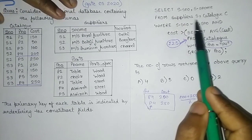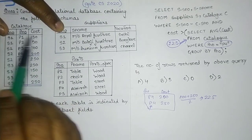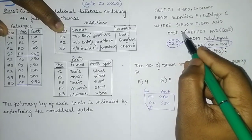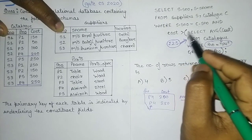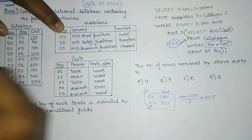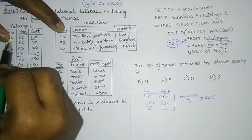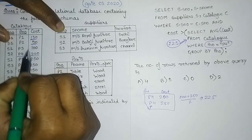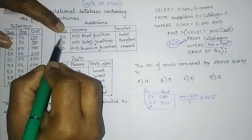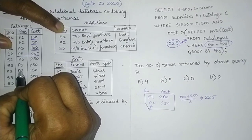Since there is a comma in the FROM clause, it is a Cartesian product, but the condition makes it effectively a join. We need supplier dot serial number equals catalog dot serial number. For the first catalog row, S1 matches S1 in supplier, but the cost is not greater than 225 — so it is excluded. For the second and third catalog rows with S1, the cost is also not greater than 225, so those are skipped as well.